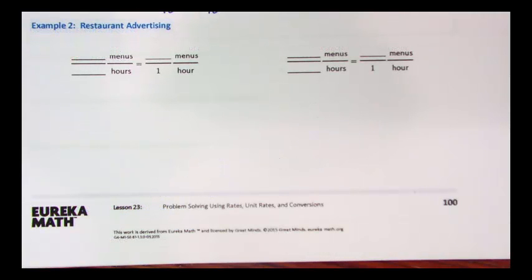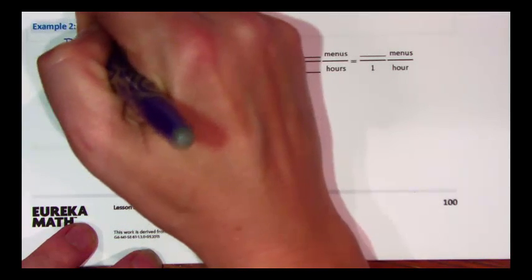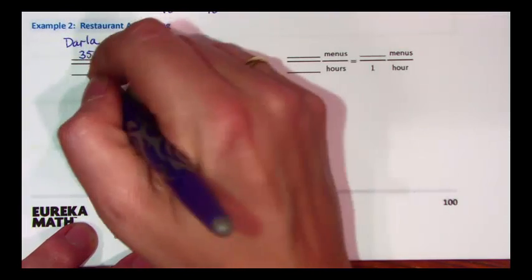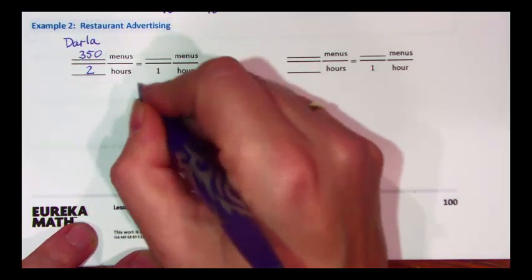Let's look at another example. Suppose you own a restaurant, and you want to do some advertising. So you hire two students to deliver take-out menus around town. One student, Darla, delivers 350 menus in two hours. So Darla, 350 menus in two hours. Remember, our order matters.